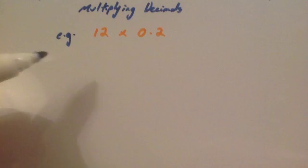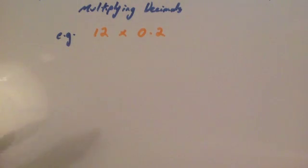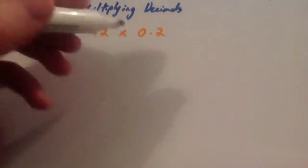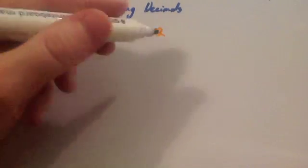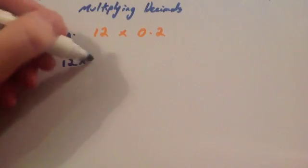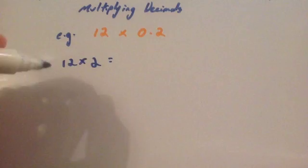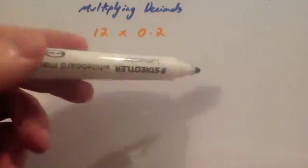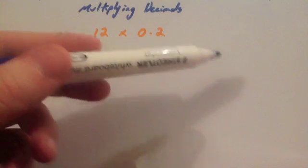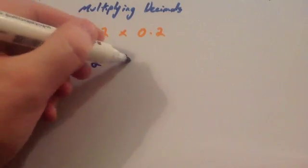Let's have a look at the next example: 12 multiplied by 0.2. Step one is multiply the numbers without the decimal points. So that would be 12 multiplied by 2. Now these multiplications might be a bit trickier and you may have to use the grid method to work out the answer. But 12 times 2 equals 24.